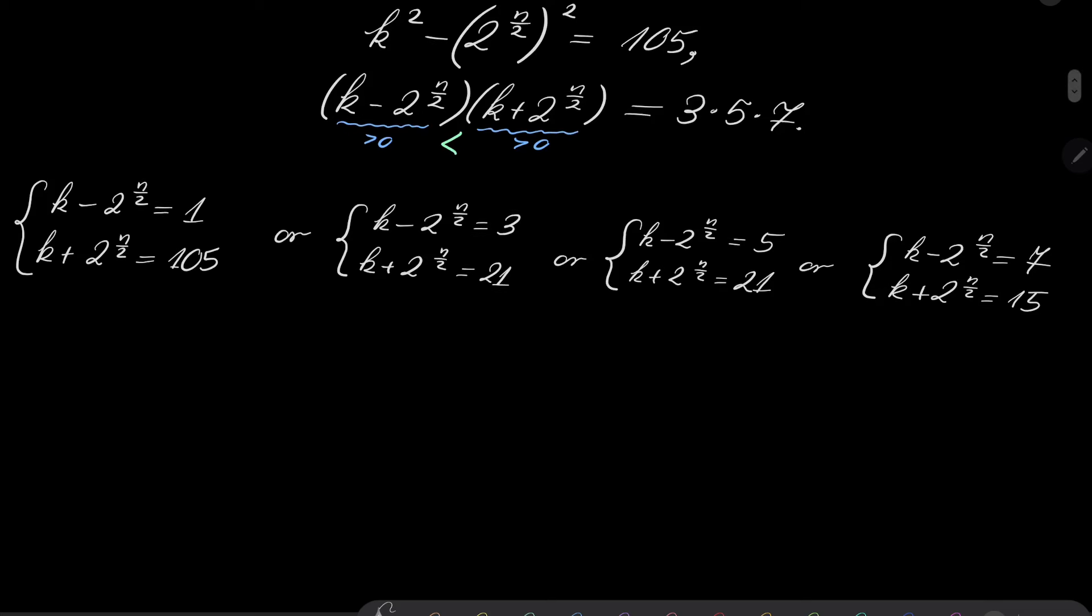And now, let's solve all of these equations. So, first, in the first case, it turns out that after subtracting these two equations, two to the power of n over 2 equals 106 over 2, so it's 53. And of course, here we have no solutions.